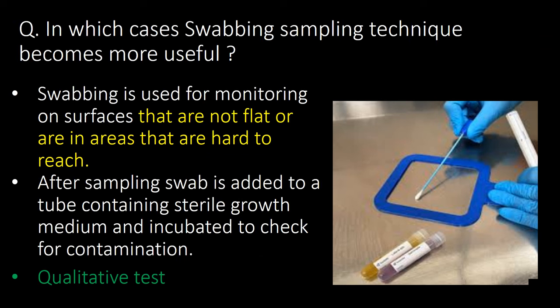In which cases does the swabbing sampling technique become more useful? Swabbing is used for monitoring surfaces that are not flat or areas that are hard to reach. After sampling, the swabs are added into a tube containing sterile growth medium and incubated to check for contamination. This is a qualitative type of test.